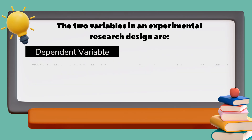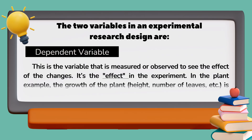The dependent variable is the variable that is measured or observed to see the effect of the changes. It's the effect in the experiment. In the plant example, the growth of the plant — such as height, number of leaves, and so on — is the dependent variable.